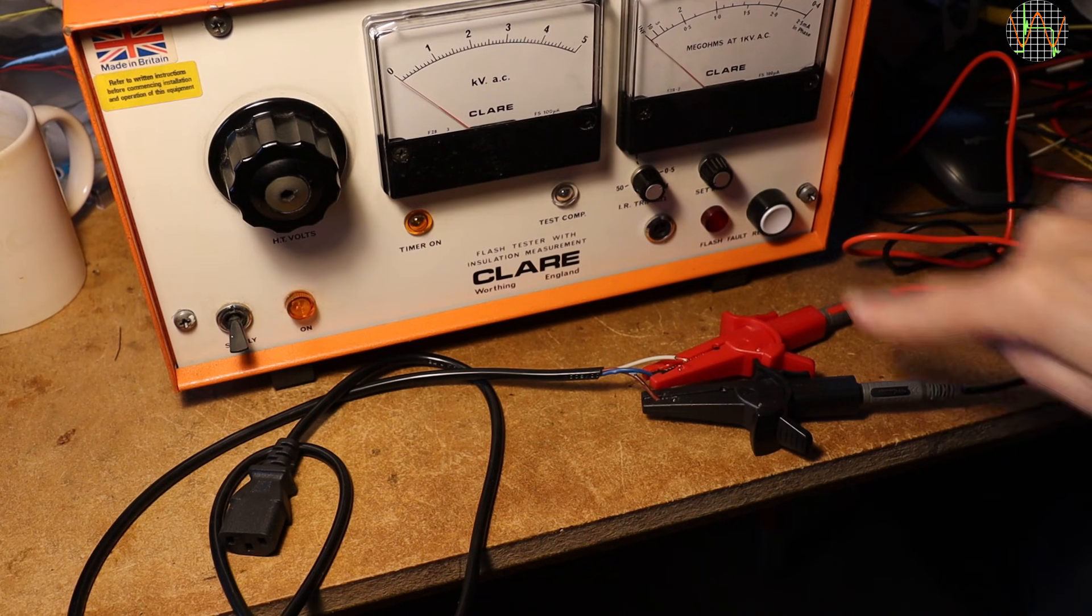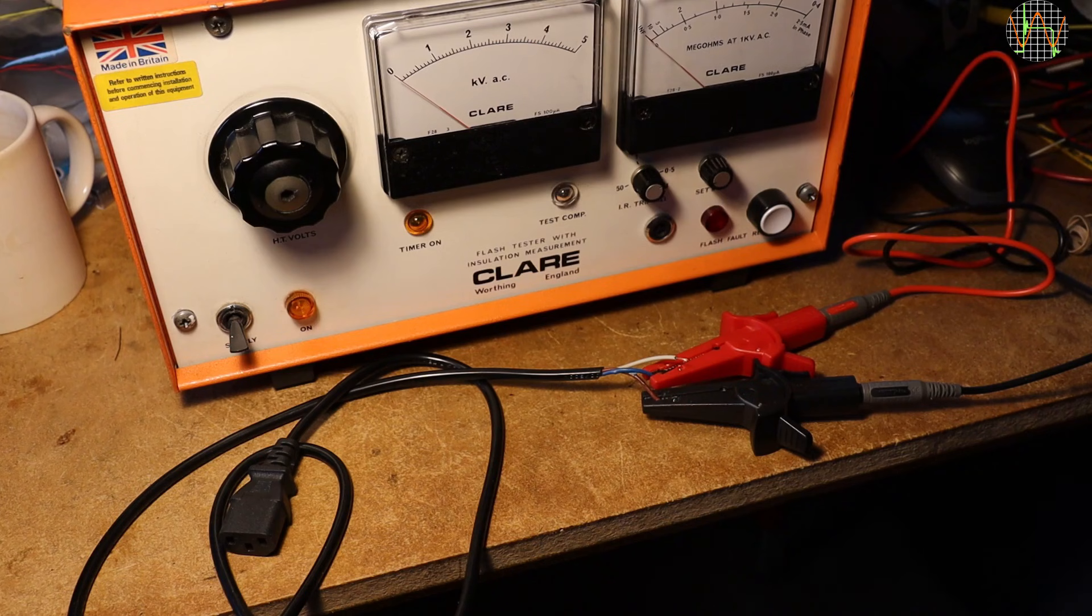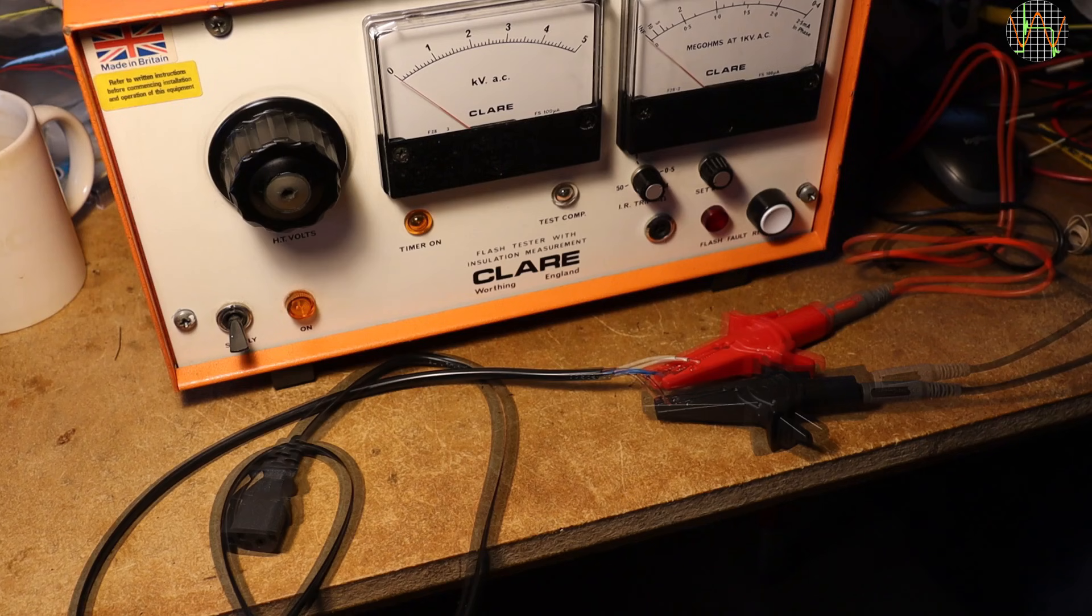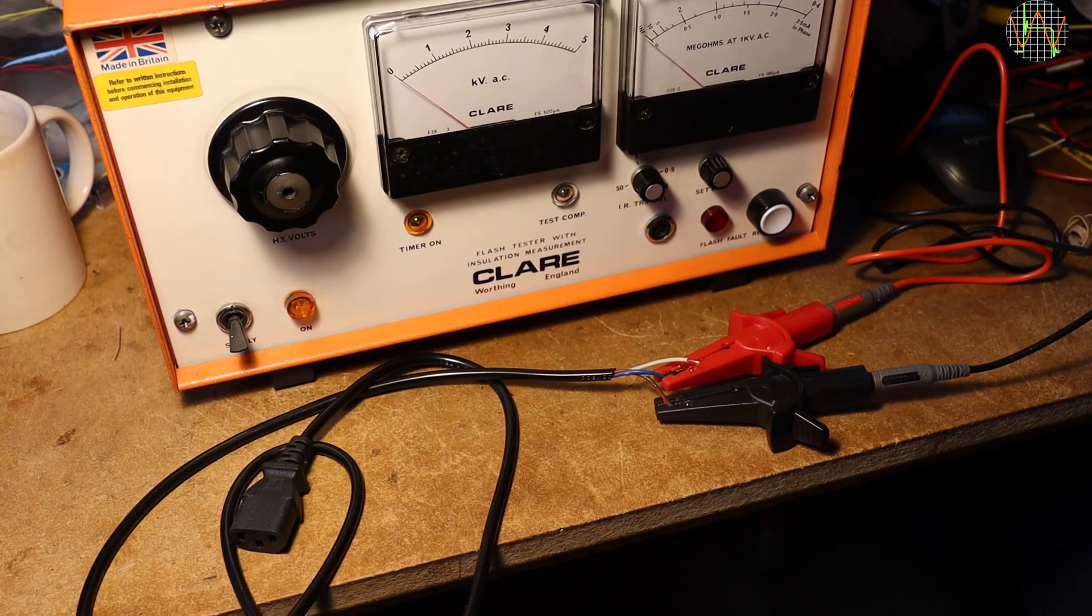To be fair, I was amazed that the melted insulation could even withstand 1000V. The question is, can it still handle 1000V now that a flashover has happened?